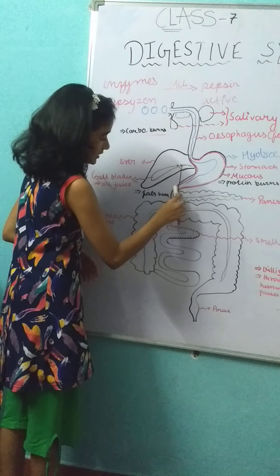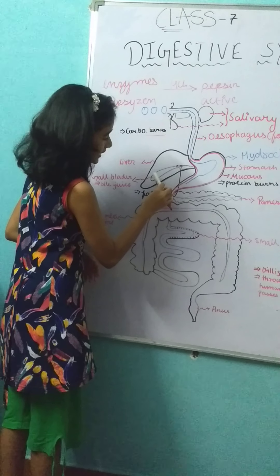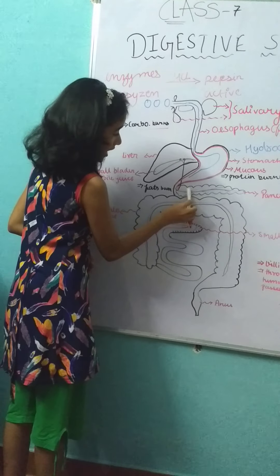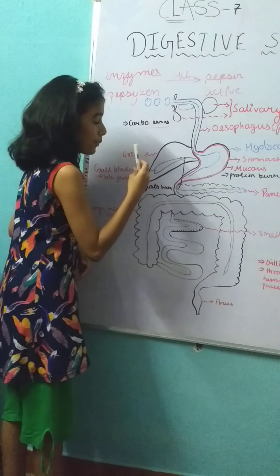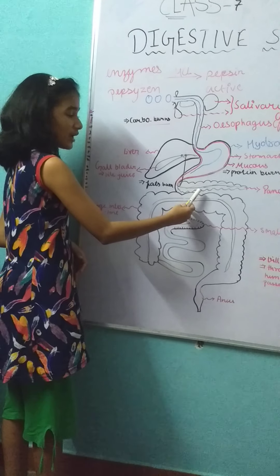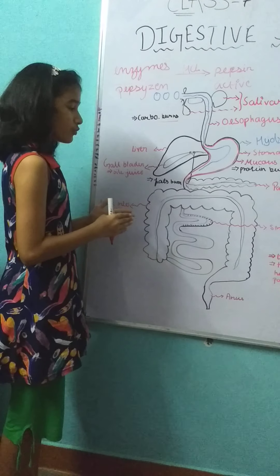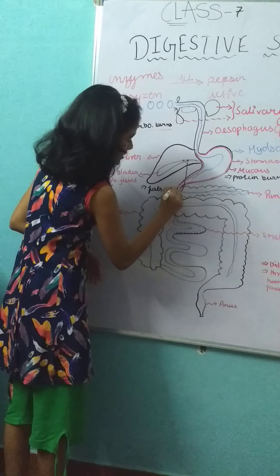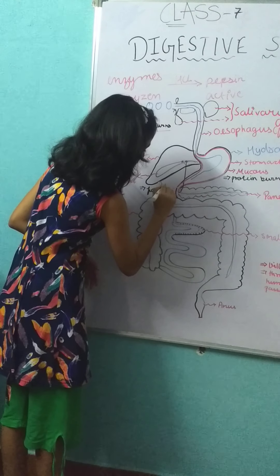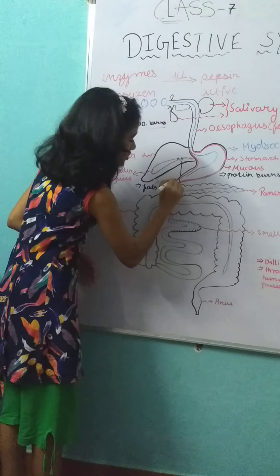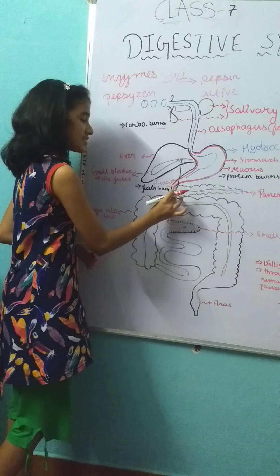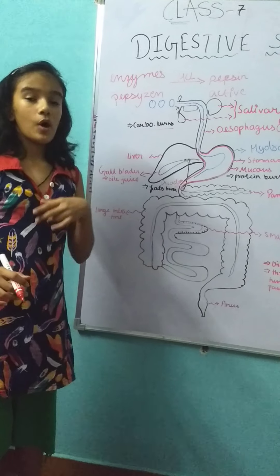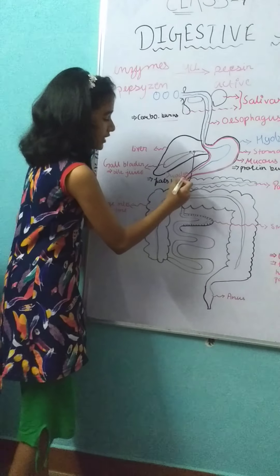The fats are digested with the help of the gallbladder. The gallbladder and the pancreas provide bile juice and pancreatic juice, which helps to digest the food easily. This part here is known as the duodenum, which is the widest part among all the sections.